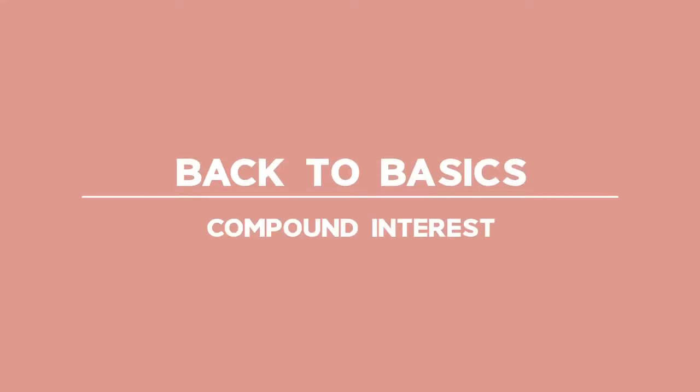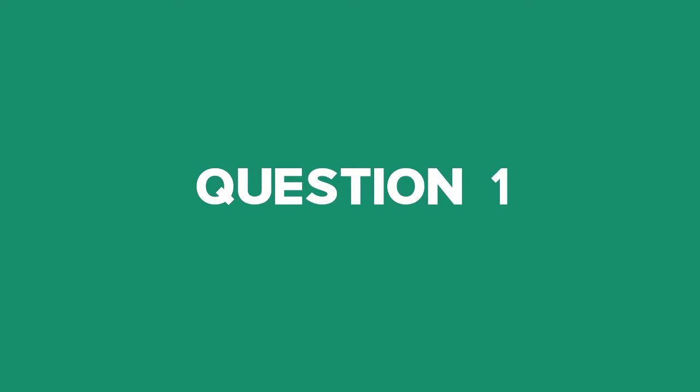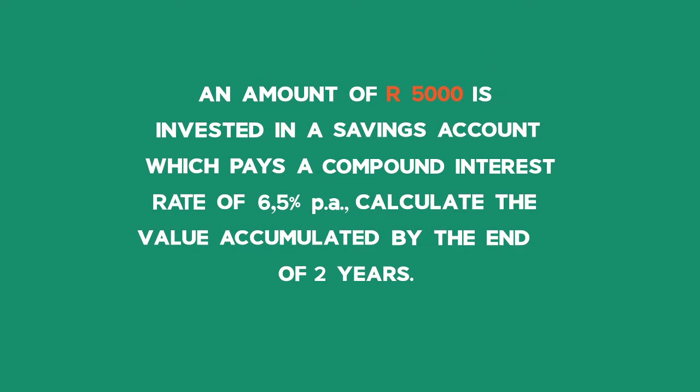Recording Grade 10 Compound Interest Question 1. An amount of 5,000 Rand is invested in a savings account which pays a compound interest of 6.5% per annum. Calculate the value accumulated by the end of two years.